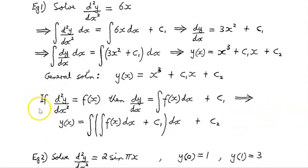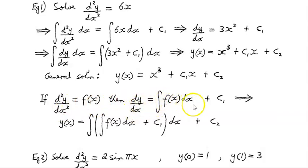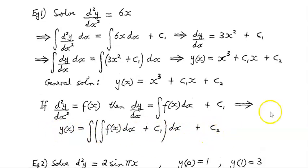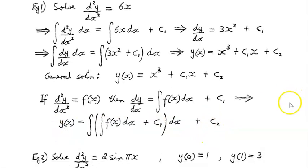In general, for anything of the form d²y/dx² = f(x), then dy/dx will be the integral of f(x) dx plus c1, and y(x), the total general solution, will be the integral of all that plus another constant c2. So you anti-differentiate twice and you'll have two constants of integration.